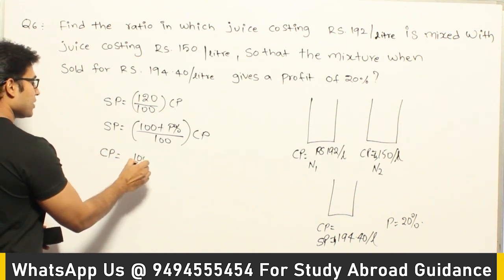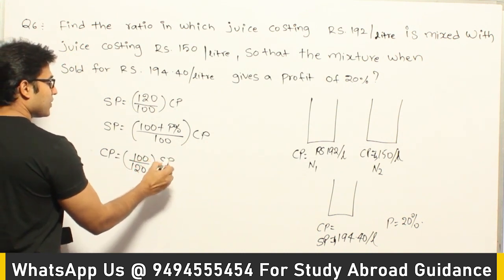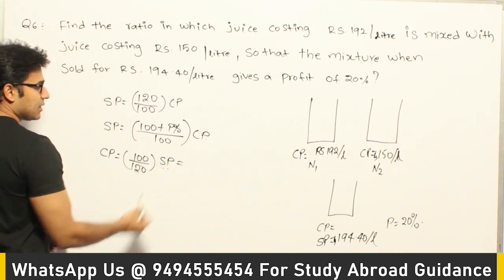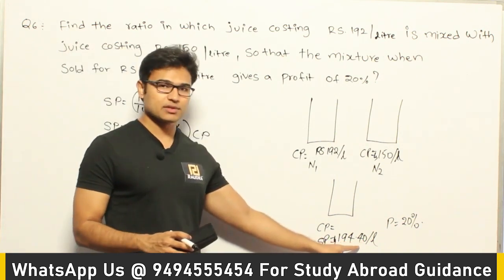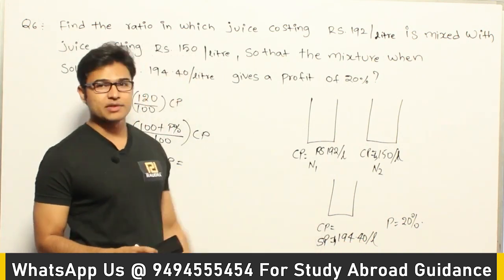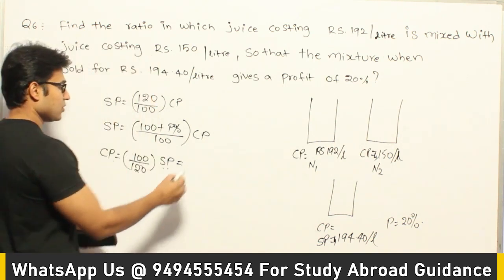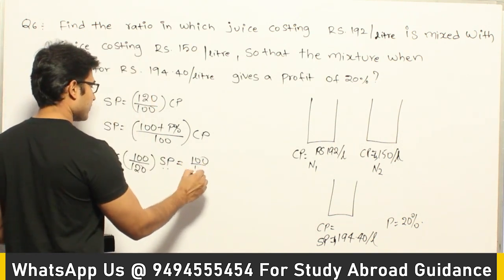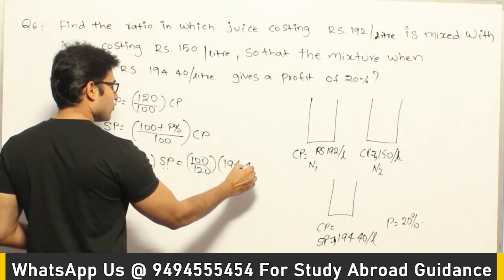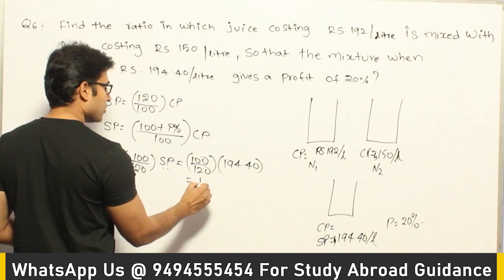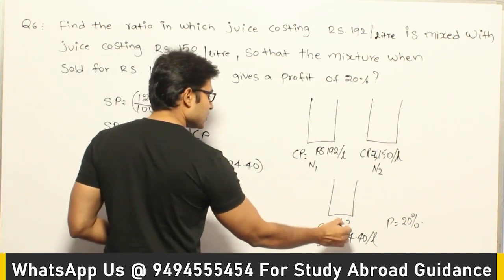They say the juice is sold at 194.4 rupees per litre making a profit of 20%. So the cost price is (100 / 120) × 194.4, which gives us 162. The cost price of the mixture is 162 rupees per litre.